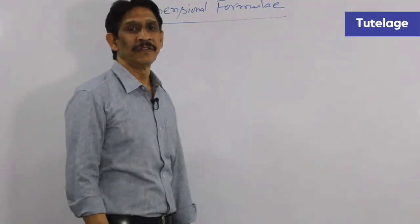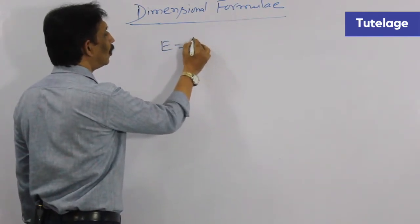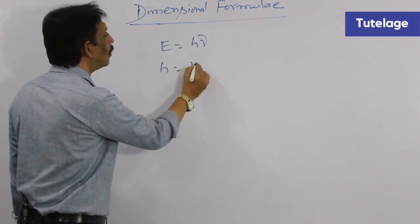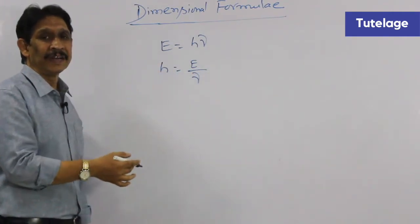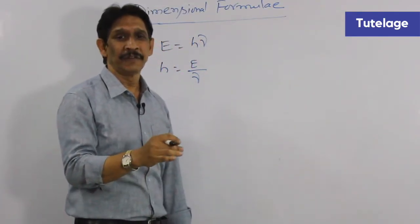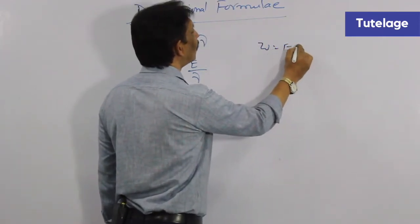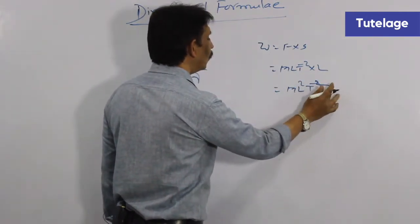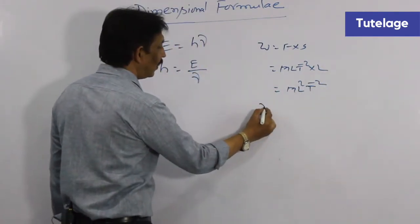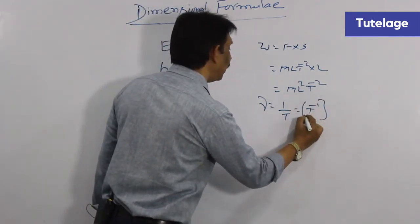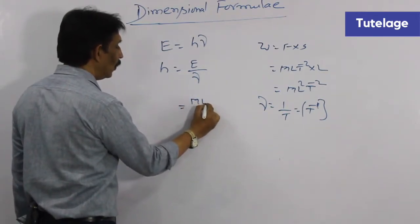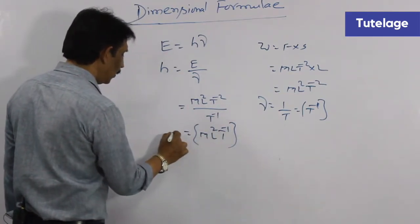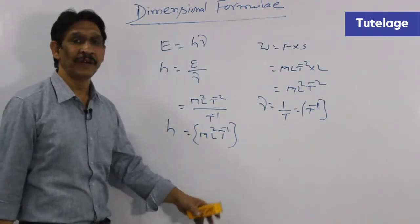Let us go for one more example — Planck's constant. The energy of a photon is E equals h nu, where h is Planck's constant, E is energy, and nu is the frequency of incident radiation. So h equals E by nu. The dimensional formula for energy is the same as work, which is M L square T minus 2. Frequency is 1 by T, that is T minus 1. So h equals M L square T minus 2 divided by T minus 1, giving M L square T minus 1 as the dimensional formula for Planck's constant.